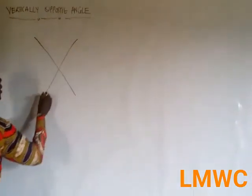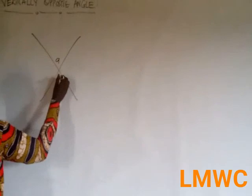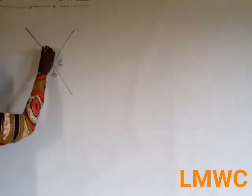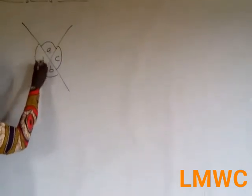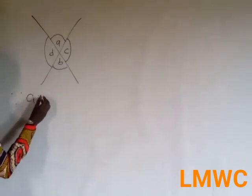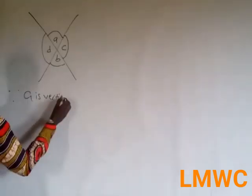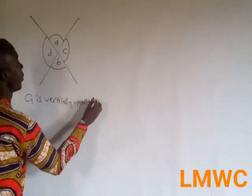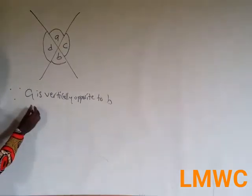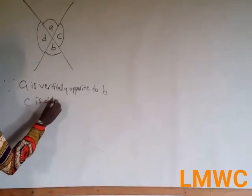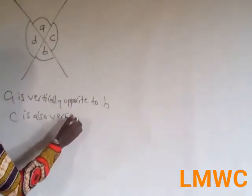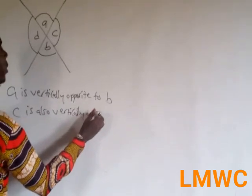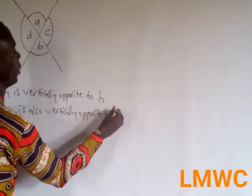So if I give you something like this: A, B, C, D. You see A is facing D, or A is opposite to B, and C is also opposite to D. We conclude that A is vertically opposite to B, and C is also vertically opposite to D.